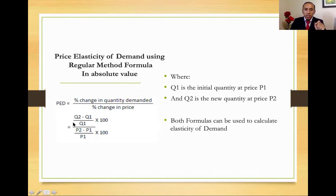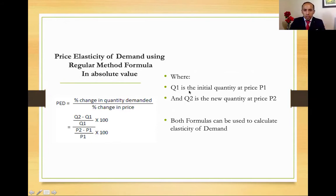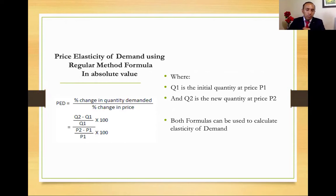In the regular method, we take the changes in quantity — Q2 minus Q1 over the original quantity — divided by price 2 minus price 1 over the original price 1. If we're doing it in percentages, we multiply by 100, which cancels out since they're each divided by 100. Q1 is the initial quantity demanded at the original price 1, and Q2 is the quantity at the changed price 2. Both formulas can be used, but which formula is applied depends on the question.